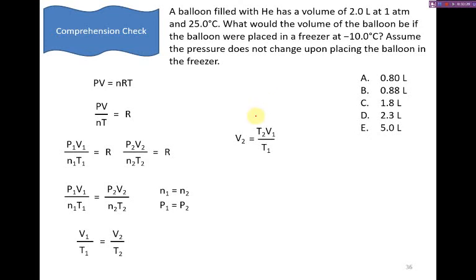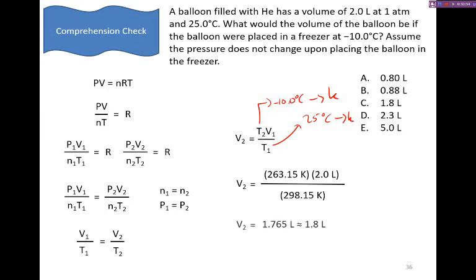Now, you might be tempted to plug in negative 10 degrees here and 25 degrees C here, but that would get you a negative volume. It's impossible to have a negative volume. This demonstrates for you exactly why you need to convert from Celsius to Kelvin for each of these calculations. After we do so, we can see that the volume changes by approximately 20% to a final volume of 1.8 liters. This should make sense because we've decreased the temperature, and we know that when we decrease the temperature, the average kinetic energy goes down, the molecules aren't hitting as hard, and they're going to take up less space.